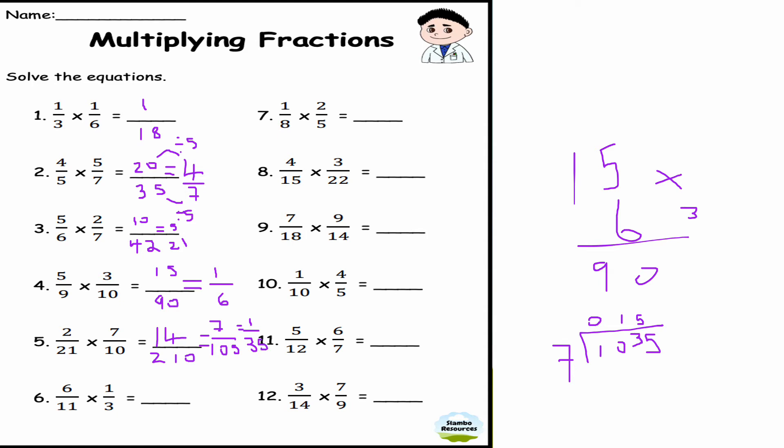This is question number six: 6/11 times 1/3. Well, 6 times 1 is 6, 11 times 3 is 33, so 6/33. If I divide top and bottom by 3, I get 2/11.